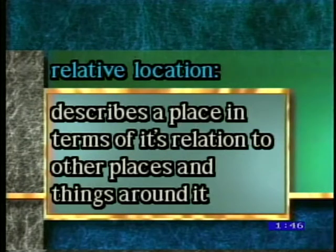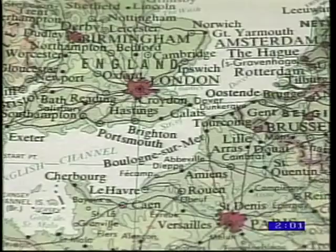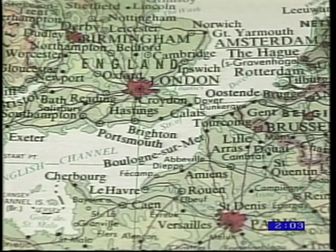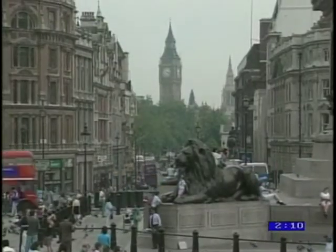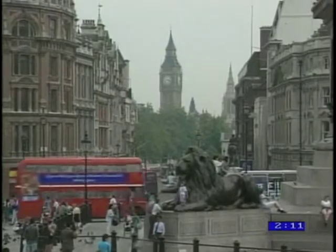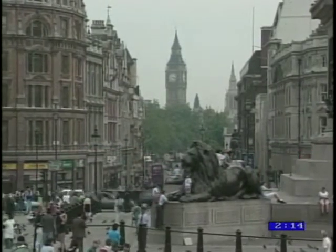Relative location, on the other hand, describes a place in terms of its relation to other places and things around it. For instance, London, the capital of the United Kingdom, is located on the Thames River, a major waterway. Its development into a world center was in many respects relative to its location near that waterway.